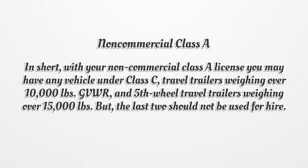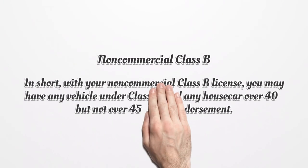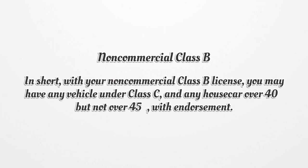Non-Commercial Class A: with your Non-Commercial Class A license you may have any vehicle under Class C, travel trailers weighing over 10,000 pounds GVWR, and 5th wheel travel trailers weighing over 15,000 pounds. But the last two should not be used for hire. Non-Commercial Class B: with your Non-Commercial Class B license, you may have any vehicle under Class C, and any house car over 40 but not over 45 feet, with endorsement.